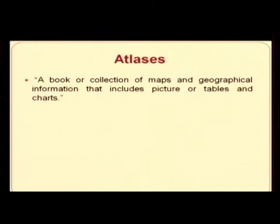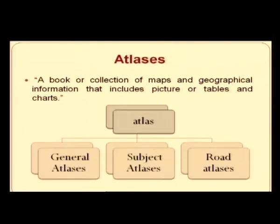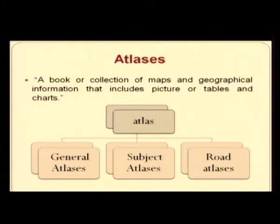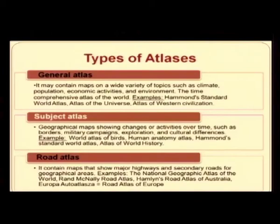An atlas is a book or collection of maps and geographical information that includes pictures, tables, and charts. An atlas is divided into three major categories: general atlas, subject atlas, and road atlas.